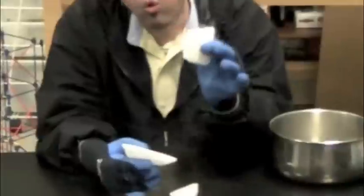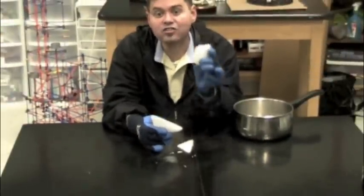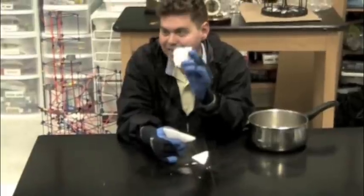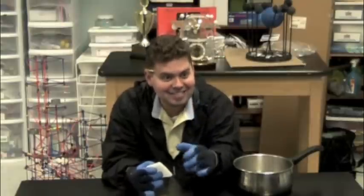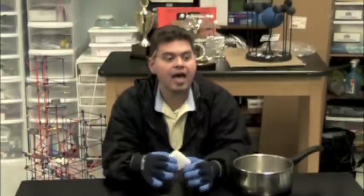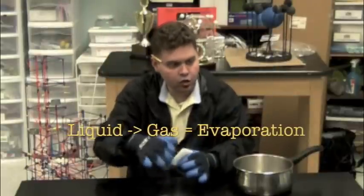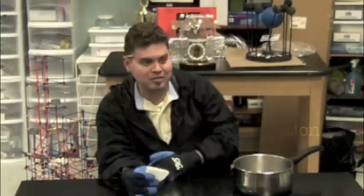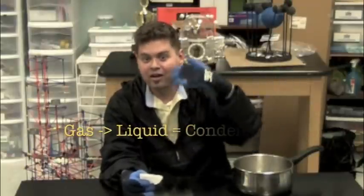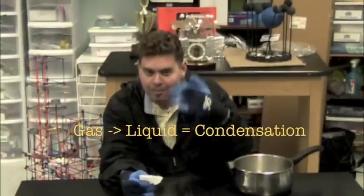A water ice cube, when it melts, goes from a solid to a liquid. And then if you kept boiling that water, it goes from a liquid to a gas. It boils, and what do we call that? Evaporation. It goes from liquid to gas — we call it evaporation. Then it goes into the sky and comes back down as precipitation. We have that whole song about evaporation, condensation, and precipitation.